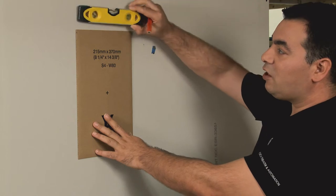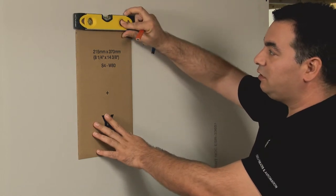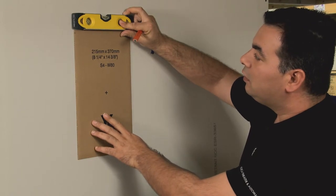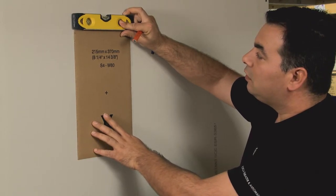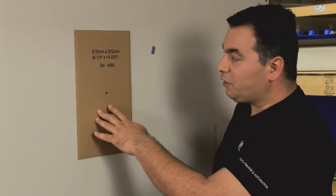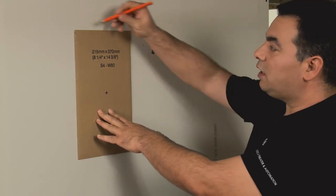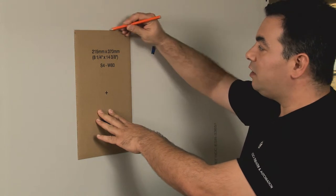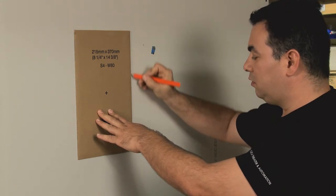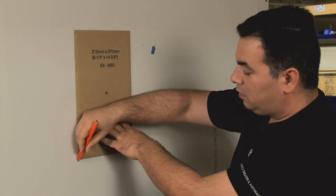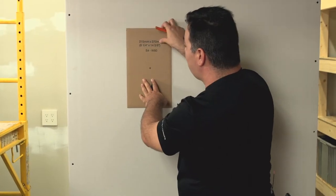I'll get my level out and make sure that my template is level. Now that I have my template square, I could trace around the outside. And now I know on the wall where I want to put my speaker.